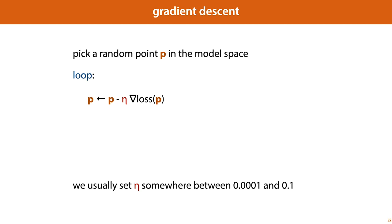There's one potential point of confusion: we have two linear functions here. One is the model, whose parameters are indicated by w and b, and the other is the tangent hyperplane to the loss function, whose slope is indicated by the gradient of the loss. These are very different functions on very different spaces. This algorithm we can iterate for a fixed number of iterations, until the loss gets low enough, or until the gradient gets close enough to the zero vector — which is also an indication that we are close to a minimum.